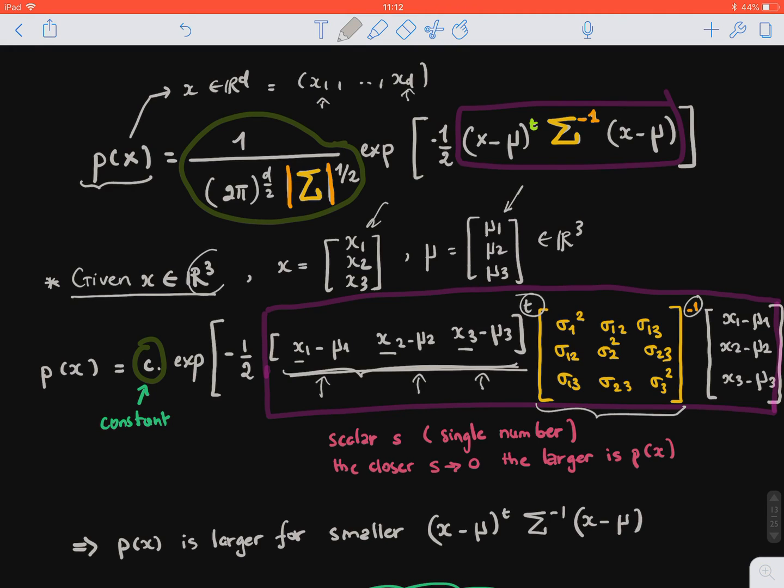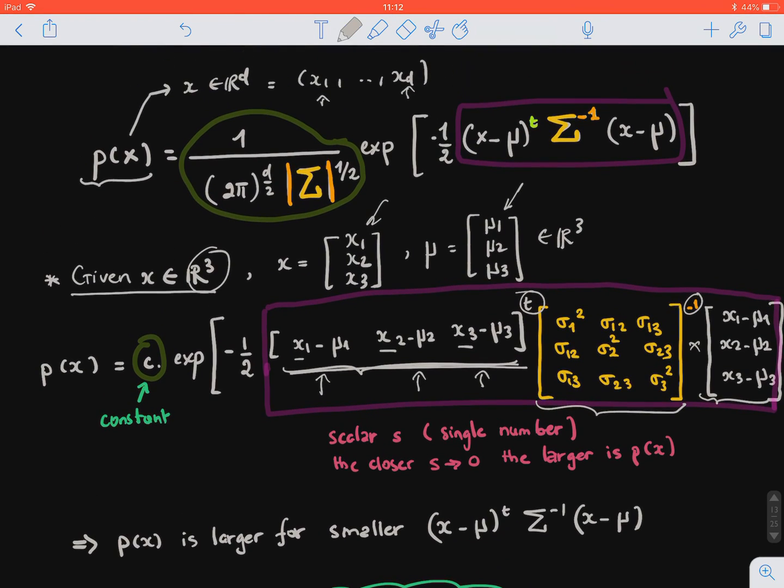So we are in R³, and then we multiply it by the difference vector between the x vector, our feature vector, and the mean vector.